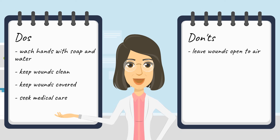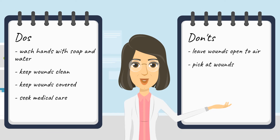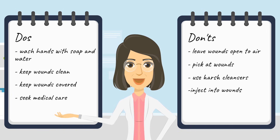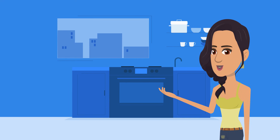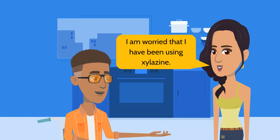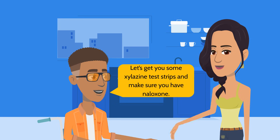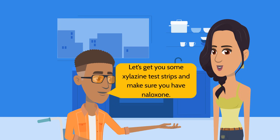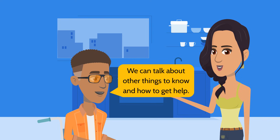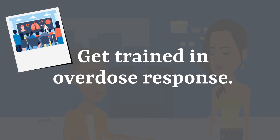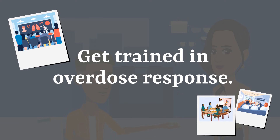Don't leave the wound uncovered or open to air, pick at the wound, or use harsh cleansers like bleach, alcohol, or peroxide. Avoid injecting into wounds if possible. It is important for everyone to know that xylozine can be an additive in the drug supply. People should know the signs of use and potential impact of xylozine. People can look out for themselves by using xylozine test strips, seeking help for withdrawal and wounds, and accessing treatment if they want to stop using. Everyone should be trained in how to properly respond to someone who may be experiencing an overdose.